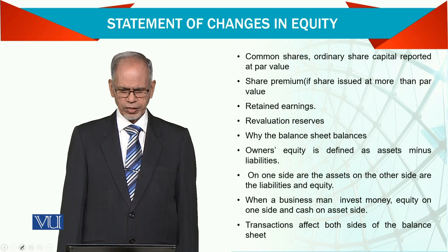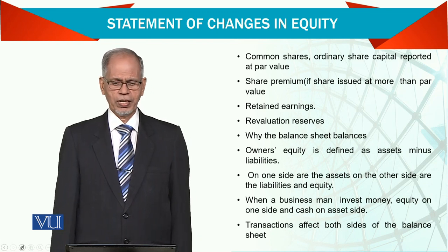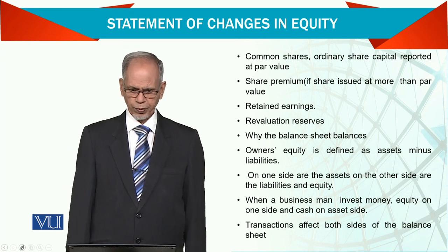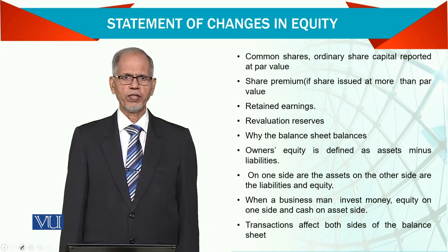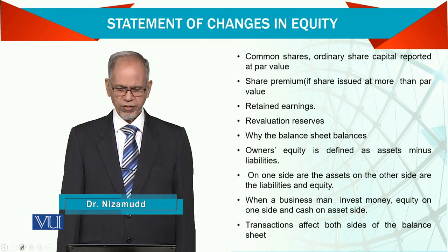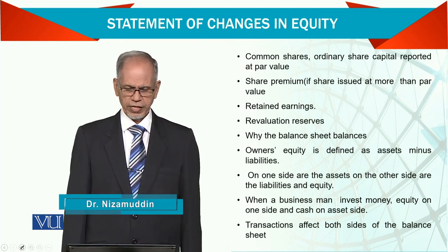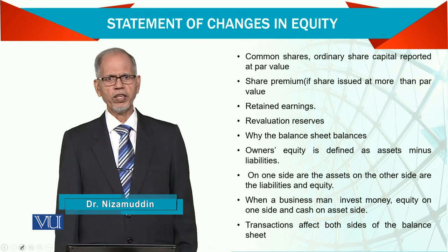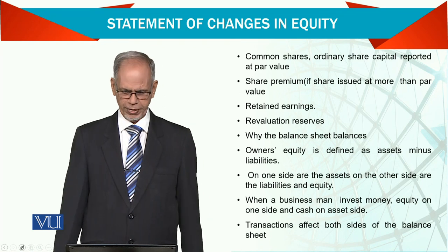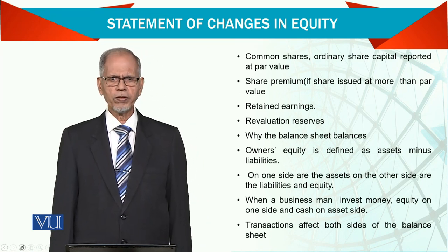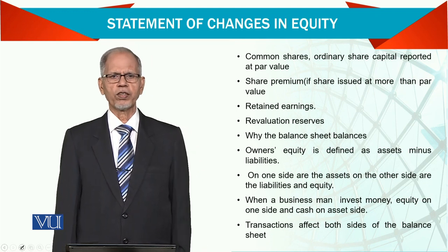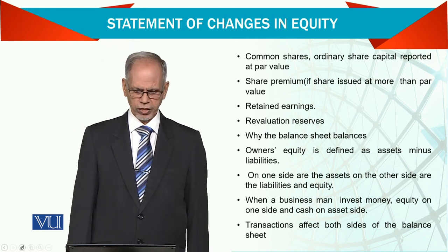In this particular statement, we have ordinary shares — which we call common shares — reported at par. If there is any premium on it, that should be reported separately. Then we have the retained earnings, which are the profits accumulated over a number of years after taking out any dividend paid.